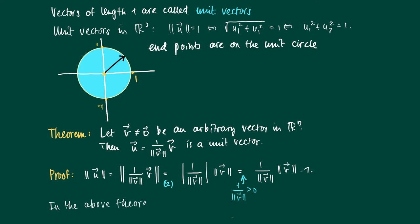So again, in the above theorem, u is called the normalization of v. It's the vector with equal direction as v, but it has a normalized length—length 1.